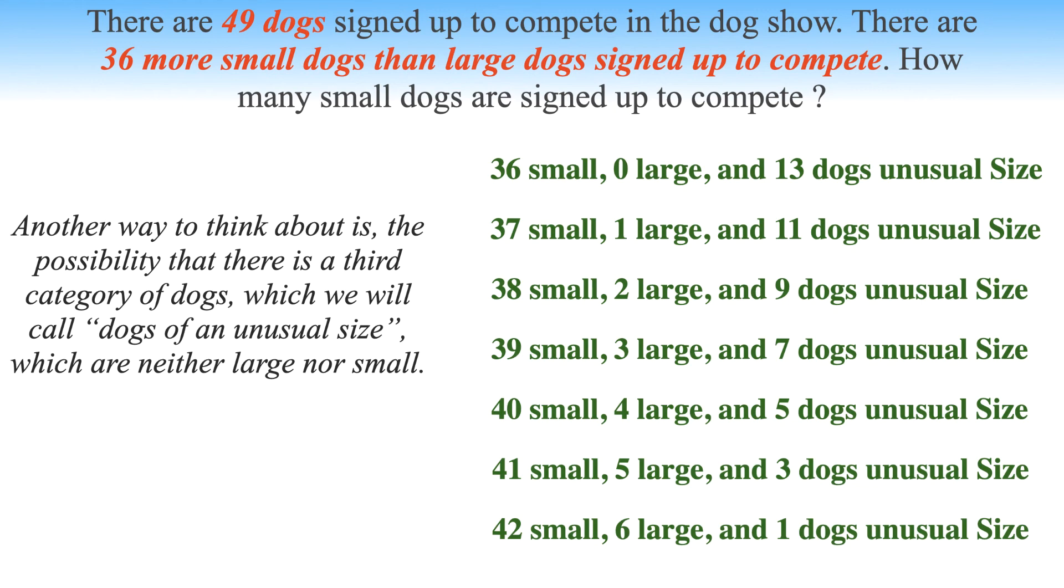In this case, there are seven possible solutions. The first of which is 36 small, 0 large, and 13 dogs of an unusual size, and the last of which is 42 small, 6 large, and 1 dog of an unusual size. Here the point is, of course, that the problem is solvable if you reject the unstated assumption that every dog is exactly one of large and small.